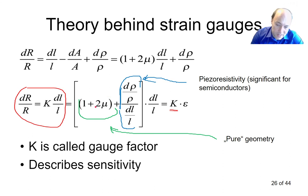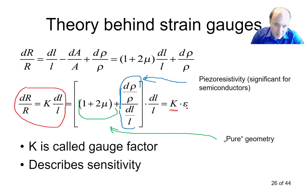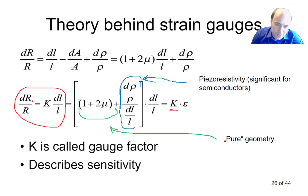For semiconductor strain gauges, both the geometric and piezoresistive contributions are present, with the piezoresistive effect dominant. Semiconductor strain gauges therefore have a non-linear dependence on strain and a very large dependence on temperature. For metallic strain gauges, K is approximately 2 and the response is linear, making them more straightforward to use in practice.